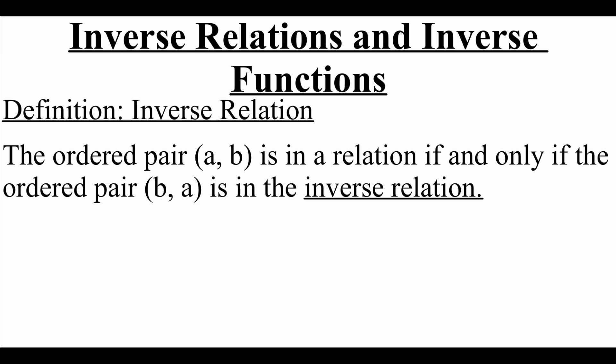So first let's define what an inverse relation is. The ordered pair AB is in a relation if and only if the ordered pair BA is in the inverse relation. So notice it's the same exact values, they're just flipped around. For example, if the ordered pair 1, 3 was in our relation, then we flip-flop the ordered pair to make it 3, 1, and that should be in the inverse relation.